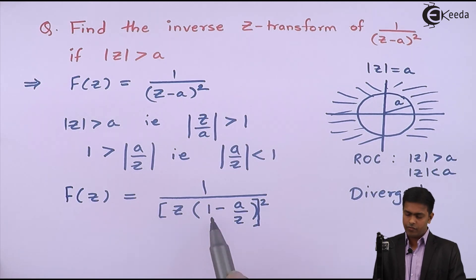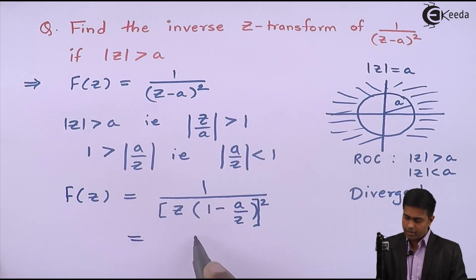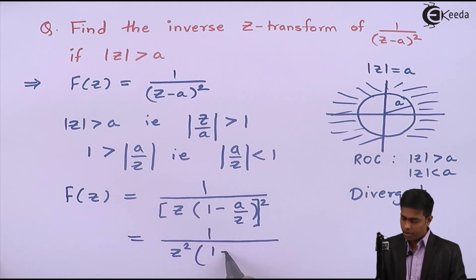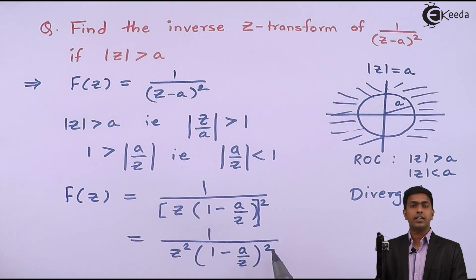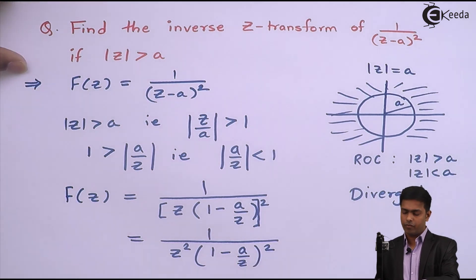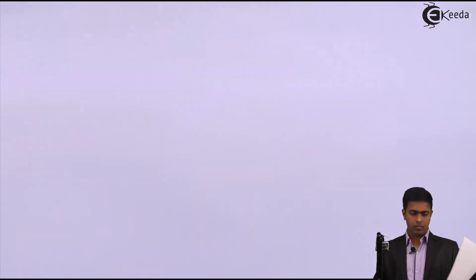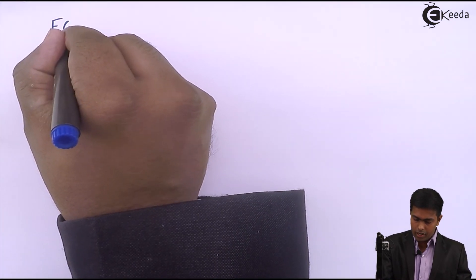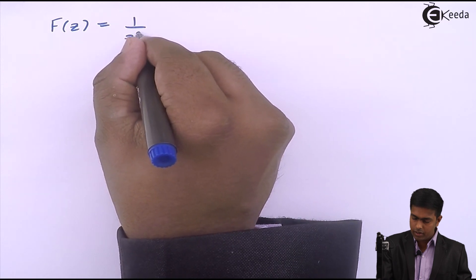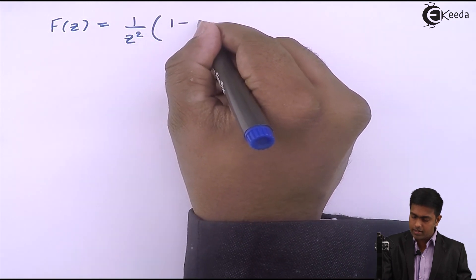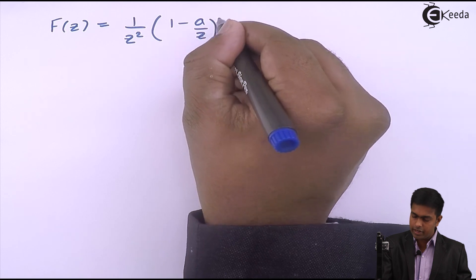This function, when solved, gives 1 upon Z square into 1 minus A upon Z, the whole square. Taking the bracket into the numerator, we get F of Z equal to 1 upon Z square times (1 minus A by Z) raised to minus 2.